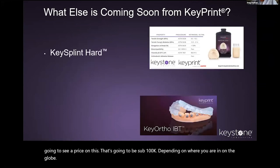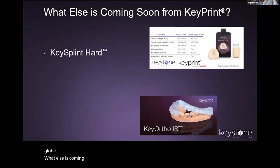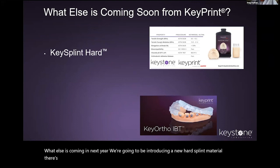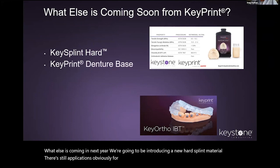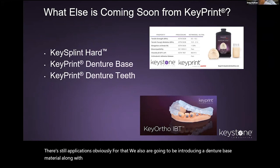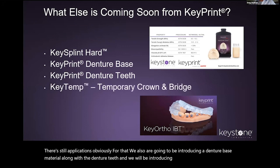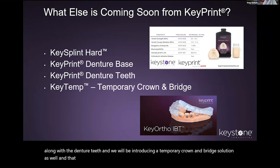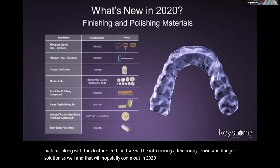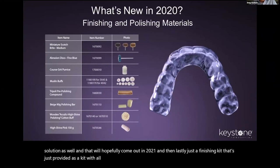Next year we're going to be introducing a new hard splint material — there are still applications for that. We're also introducing a denture base material along with denture teeth, and a temporary crown and bridge solution — all hopefully coming out in 2021. And lastly, a finishing kit with all the tools needed to work with our different materials. That concludes my part.